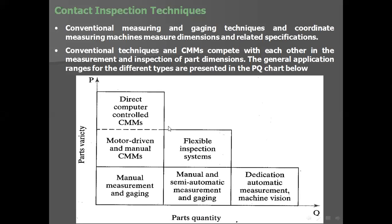When parts quantity is very high and variety is very low, go for dedicated automatic measurement — the machine vision system. This applies to high-quantity products such as water bottles, bolts and nuts, and washers that are required for many sub-assemblies.